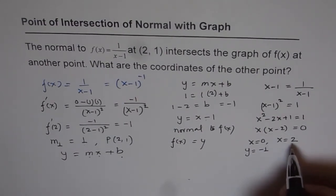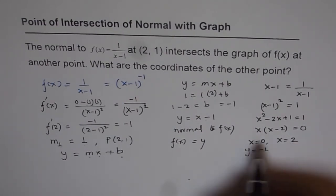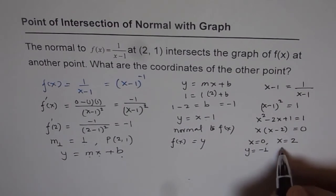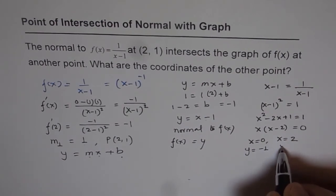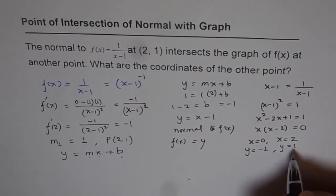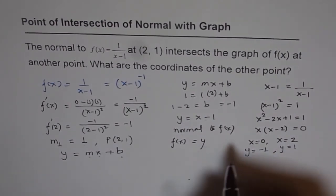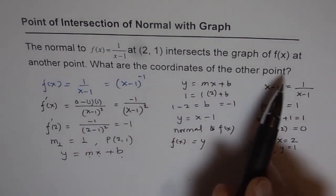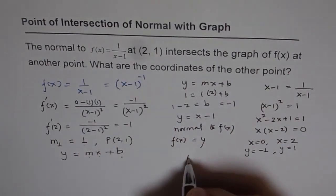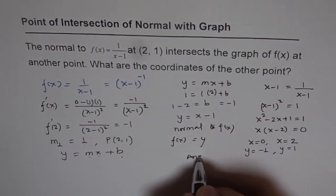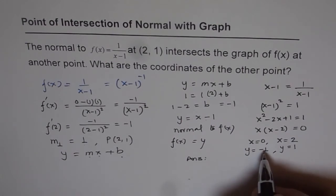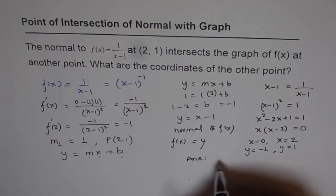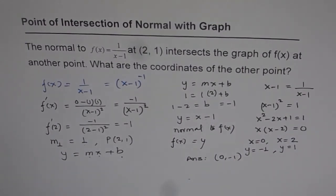We can verify: if we plug in x equals 2, we get 2 minus 1 equals 1, so y equals 1 at that point. Therefore, the coordinates of the other point are 0 and minus 1. That is how you find the coordinates of the other intersection point.